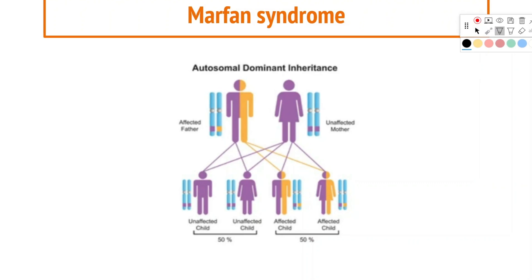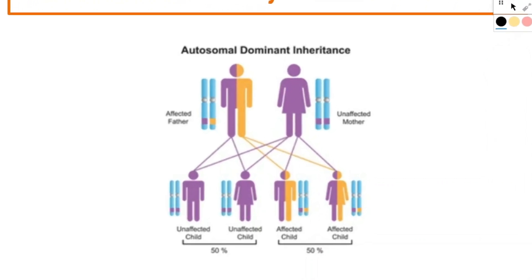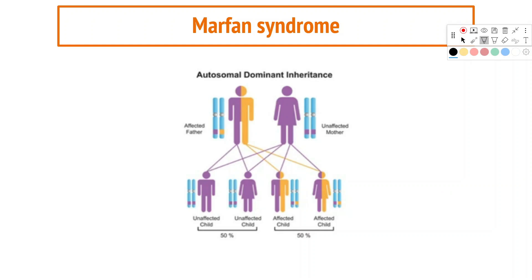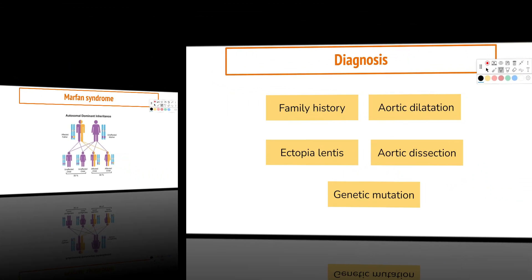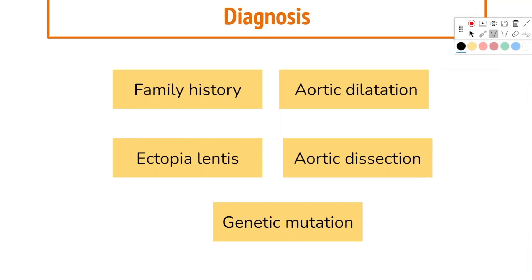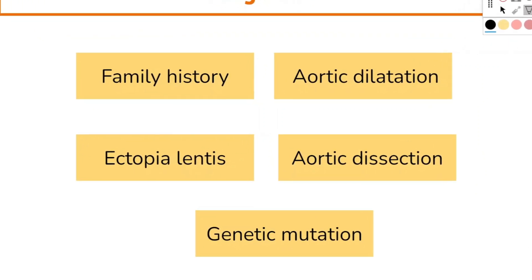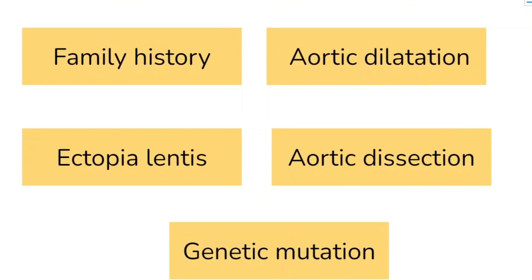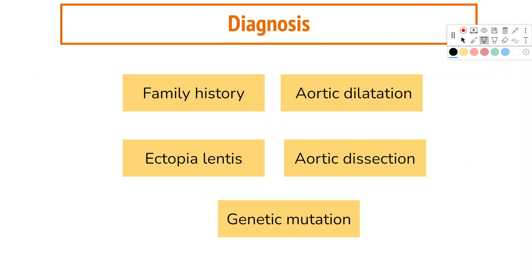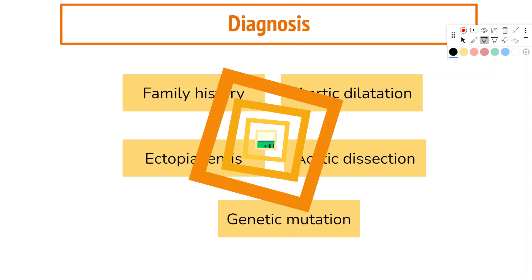Although Marfan syndrome is an autosomal dominant condition, phenotypic expression is highly variable. Affected parents may not even be aware they have it, and family history may not be positive. Diagnosis can be made if two or more of the following are present: family history of Marfan syndrome, ectopia lentis, aortic dilatation or dissection, or a causal mutation in the FBN1 gene. It is important to note that a minority of patients with Marfan syndrome do not have a defined FBN1 gene mutation.